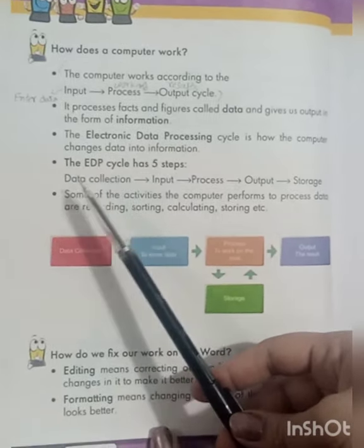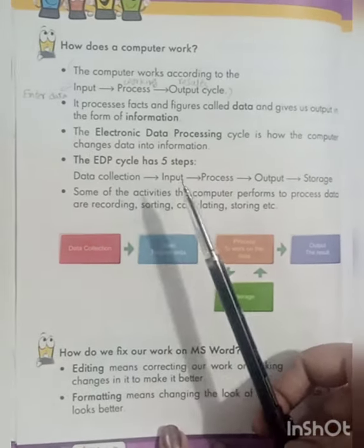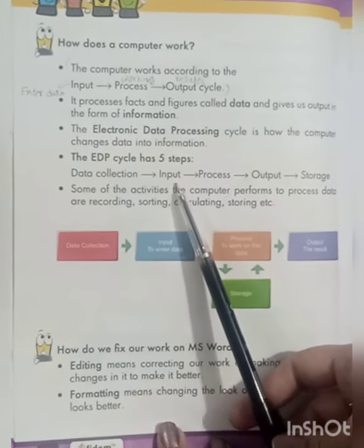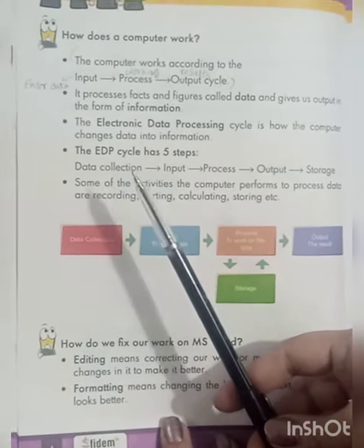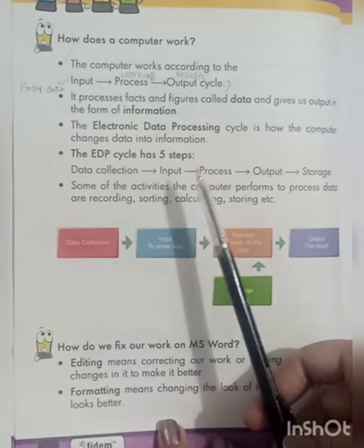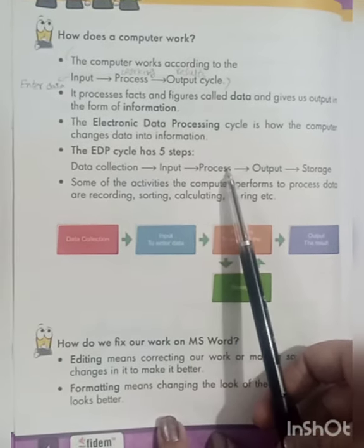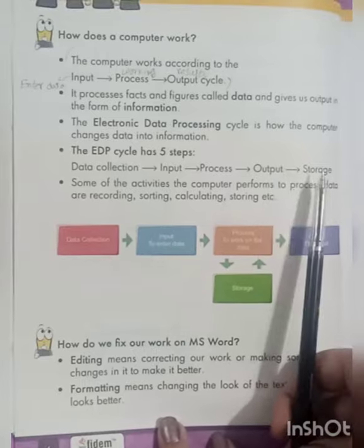Step 1 is Data Collection. Then Input. Then Processing, Output, and Storage. These are the five steps of the EDP cycle.